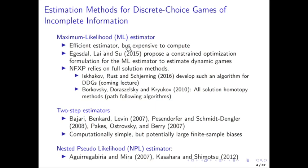Maximum likelihood is the most efficient because it's building on the entire model structure and deriving the sample criterion based on all the moments that the model makes predictions about — the entire distribution of discrete choices conditional on the states, and the state evolution. It's like the most efficient thing you can do, but it's very expensive to compute because you need to solve the dynamic model. At least you need to solve it once at the true parameters, because otherwise you wouldn't be able to figure out what the likelihood function is at that point.